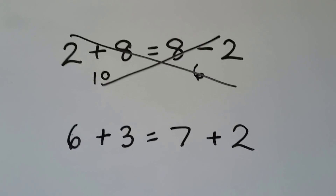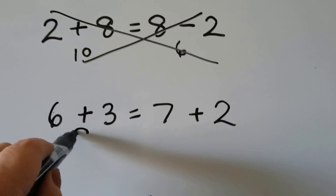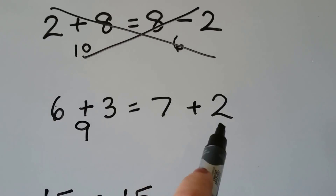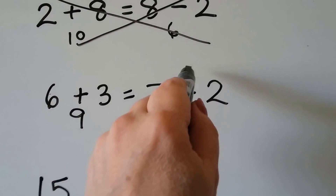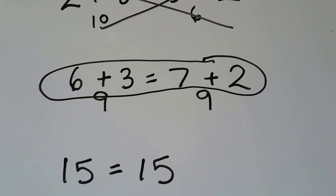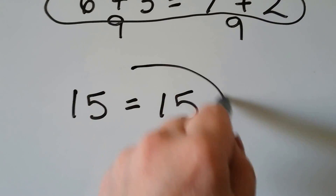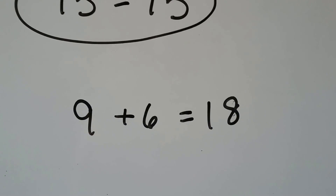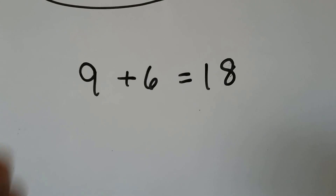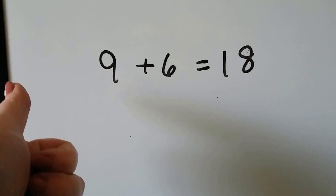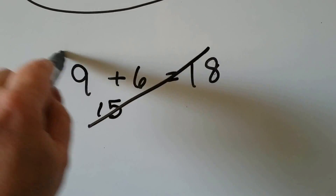6 plus 3 is equal to 7 plus 2. Start with the 6 and count on 3: 6, 7, 8, 9 — this side is a 9. 7 plus 2 — start with the 7 and count on 2: 7, 8, 9. That's a 9. 9 equals 9, yes, we can circle this one — it's true. 15 is equal to 15 — that's an easy one, yes, 15 is equal to 15. 9 plus 6 is equal to 18 — start with the 9 and count on 6: 9, 10, 11, 12, 13, 14, 15. 9 plus 6 is 15, and that's not equal to 18, so we can cross this one off — it's false.